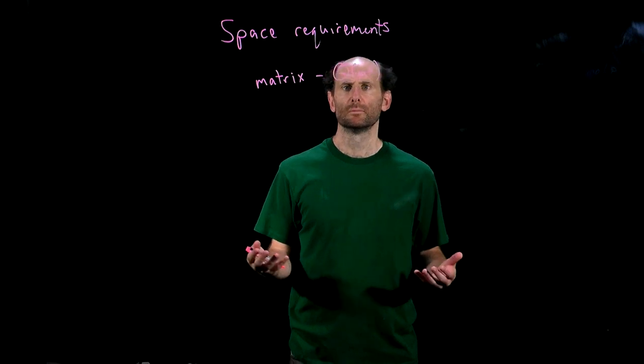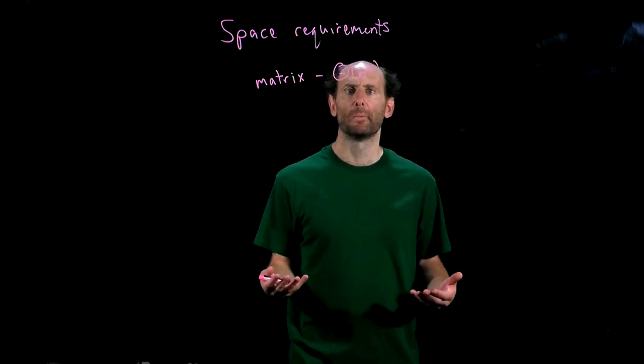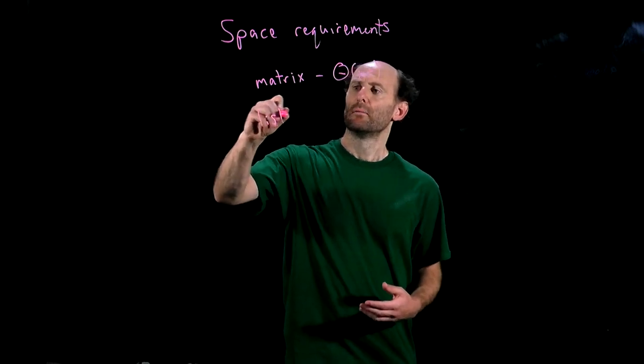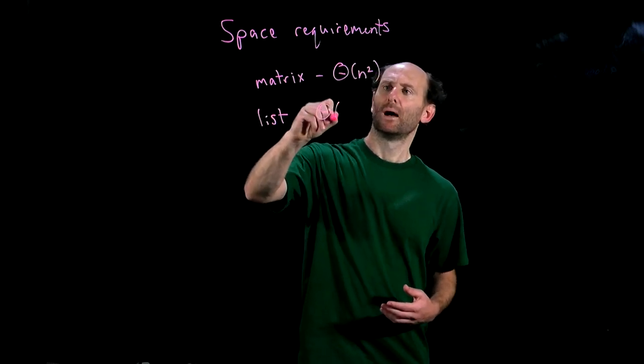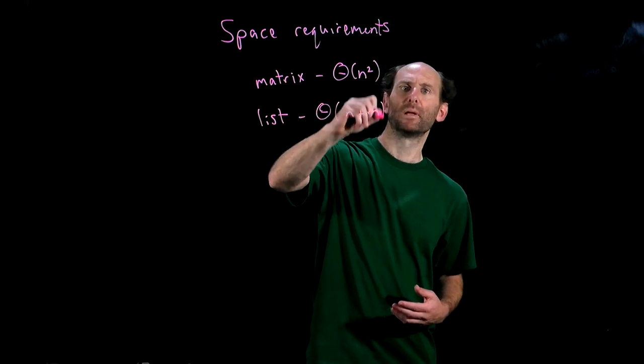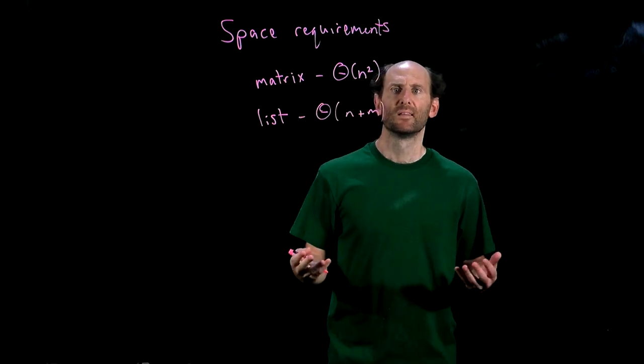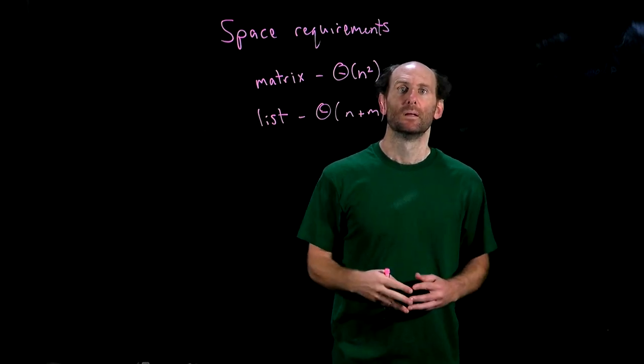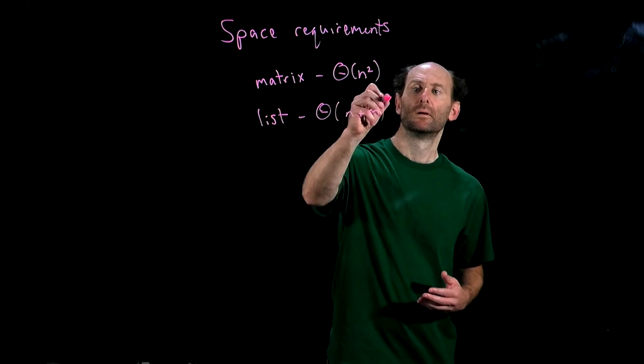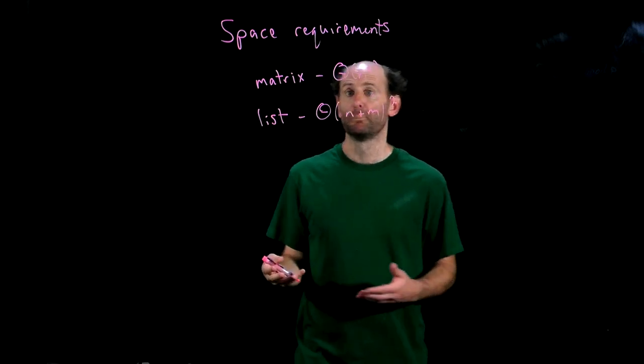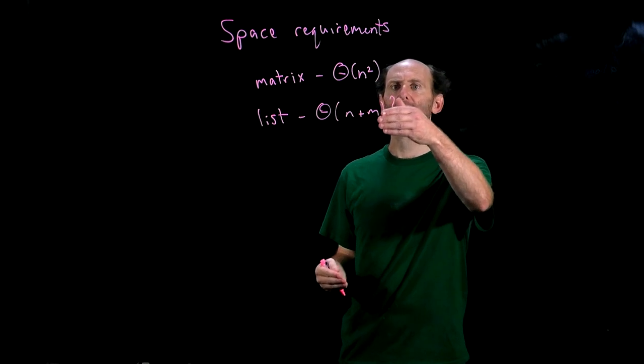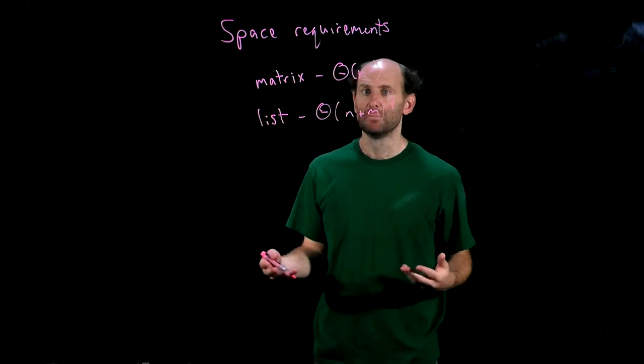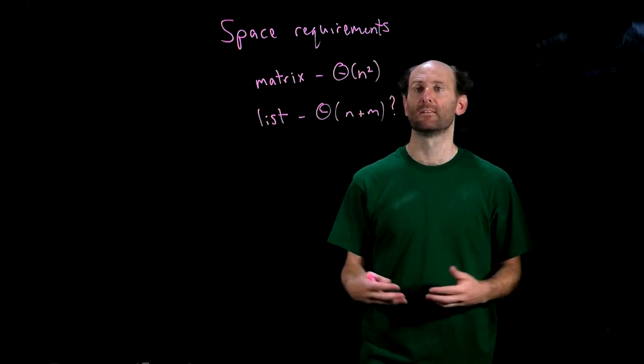How about lists? Well, on the face of it we might guess that adjacency lists require theta n plus m bits to store since there are n lists and the combined total length of the lists is m, which is the number of arcs. But is that correct? This will appear to give a very clear advantage in terms of space to adjacency lists over adjacency matrices, you know, even for a very dense digraph.